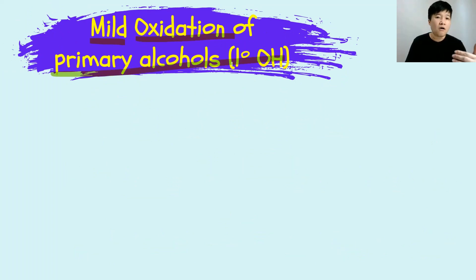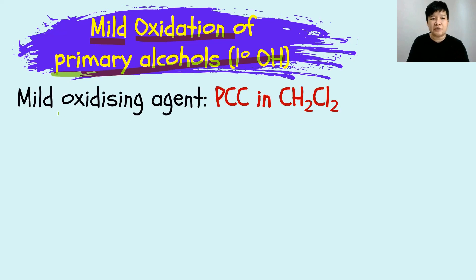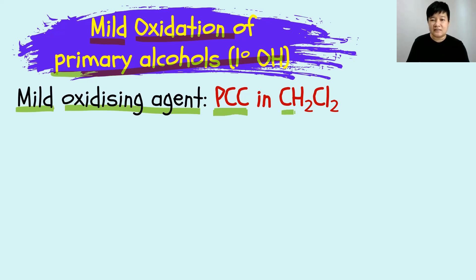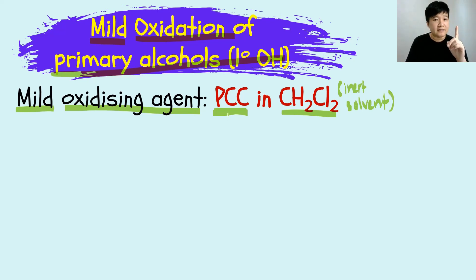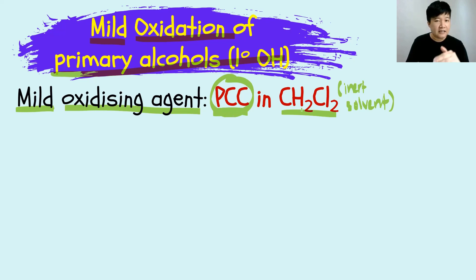Mild oxidation will use a mild oxidizing agent. The only mild oxidizing agent that we learn is PCC in CH₂Cl₂, knowing that CH₂Cl₂ is your inert solvent. So remember: mild oxidizing agent — there is only one option — PCC in inert solvent.